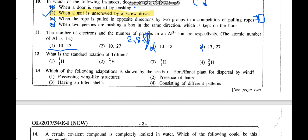Question 12: Standard notation of tritium. Isotopes are atoms of the same element with different mass numbers. Hydrogen has three isotopes — protium (mass number 1), deuterium (mass number 2), and tritium (mass number 3). In standard notation, the top number is the mass number and the bottom number is the atomic number. The atomic number must remain the same and tritium's mass number must be 3. The answer is the third option.